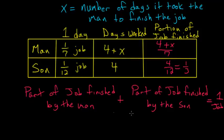And from this relationship, we can use these more specific details to write an actual equation. So we know that the part of the job finished by the man is this four plus x divided by seven. And the part of the job finished by the son is this one-third. And we know that this is just equal to one total job, or one.